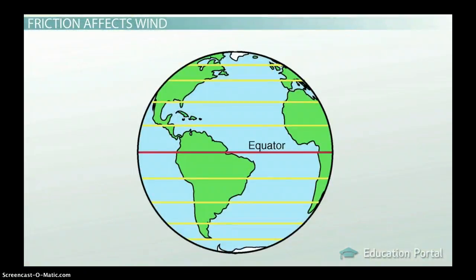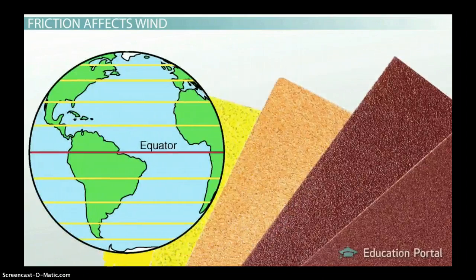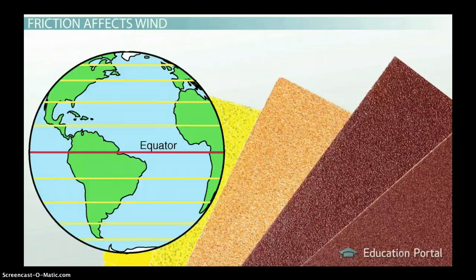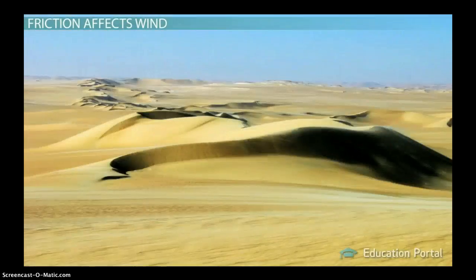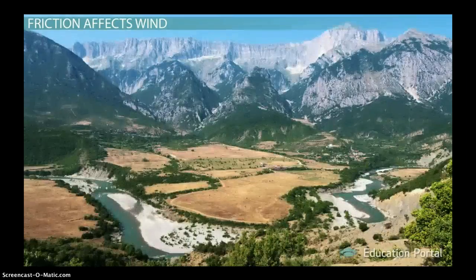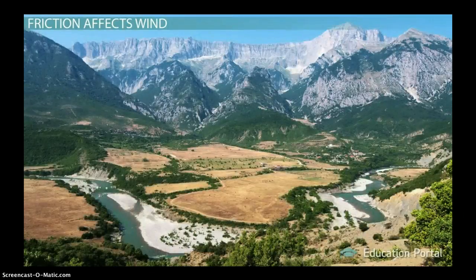Wind encounters friction all over Earth, because it's constantly coming in contact with Earth's surface. And the rougher the surface, the more friction it will experience. So a sandy desert will allow wind to move over it more easily, but a rough mountain range is likely to slow that wind down considerably.